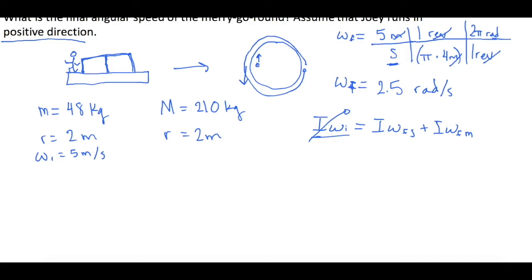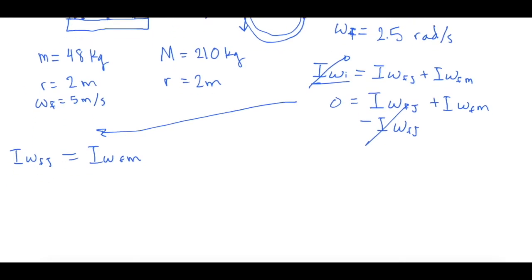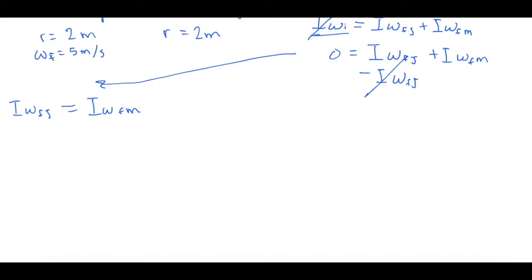So omega final, change all these to final. Okay, so now we're straight on everything. So we have 0 is equal to I omega final of Joey, plus I omega final of the merry-go-round. So let's minus over Joey. So we have I omega final of Joey is equal to negative I omega final of the merry-go-round. So this makes perfect sense. What's happening is whatever momentum Joey starts with has to equal the momentum of the merry-go-round. So it sounds like we're on the right track.